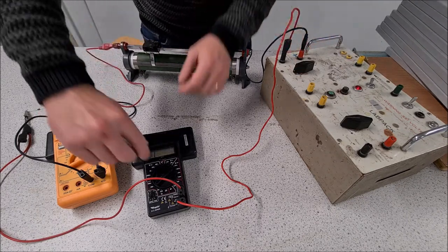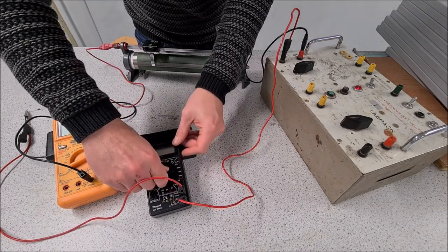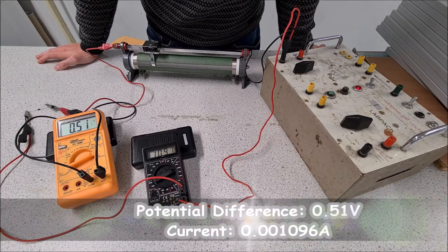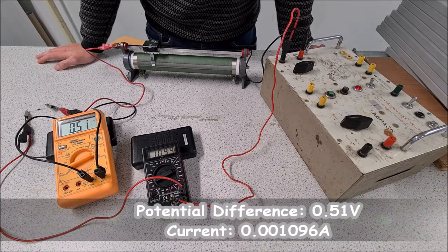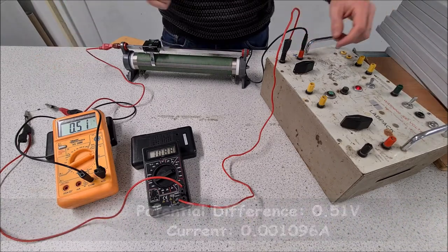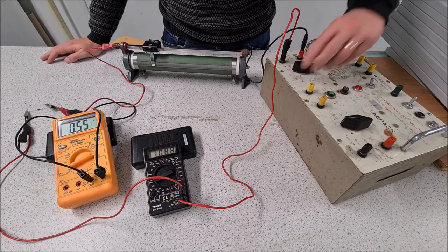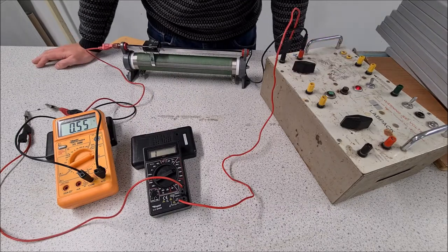We're up to 0.48 volts, now we'll need to change the setting on this multimeter to bring it up, and we have 1096 microamps. We'll change these to amps afterwards. And then one last reading, we have 0.55 volts, and the current is gone up to 5.6 amps.